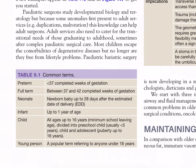Pre-term: less than 37 completed weeks of gestation. Full term: between 37 to 42 completed weeks of gestation. Neonate: newborn baby, up to 28 days after the estimated date of delivery. Infant: up to 1 year of age. Child: all ages up to 16 years, divided into preschool child — usually less than 5 years — and child or adolescent in puberty up to 16 years. Young person: a popular term referring to anyone under 18 years.